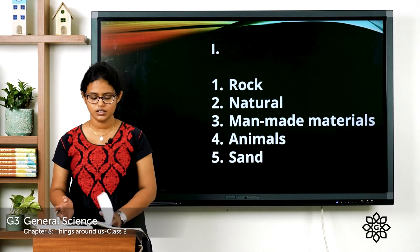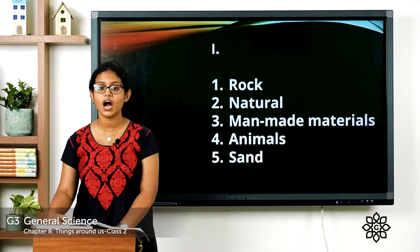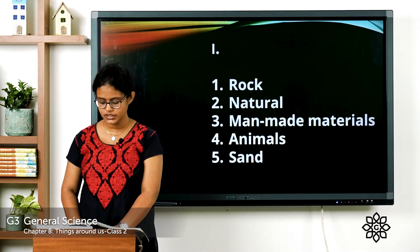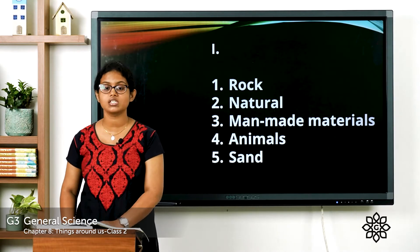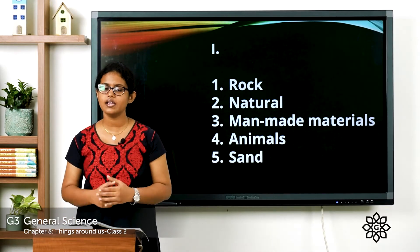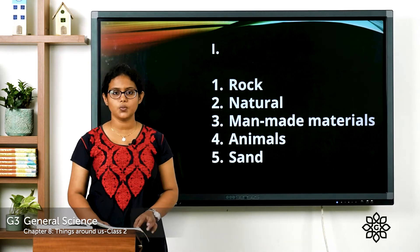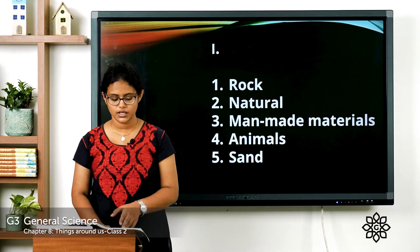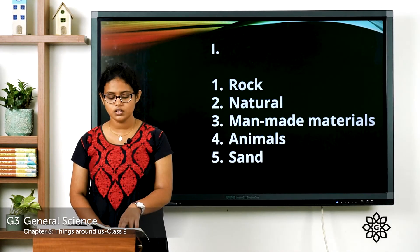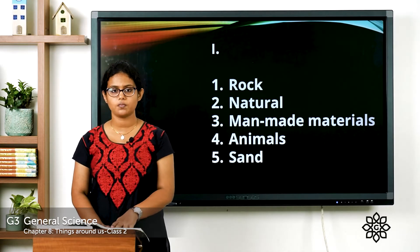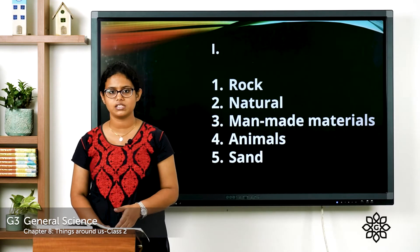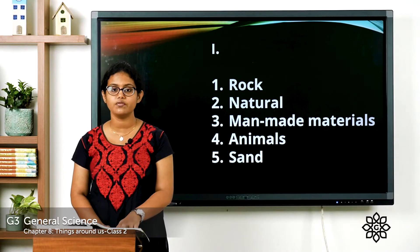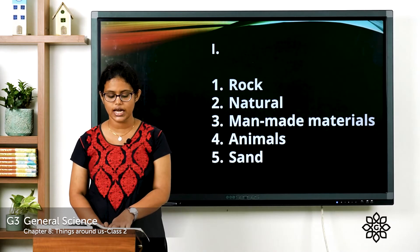Now let's see the answers. Question one: an example of a hard material is rock — rock is a hard material. Question two: materials such as honey and milk are natural. Question three: paper and plastics are man-made materials, made by people. Question four: wool and leather are natural materials obtained from animals. Question five: glass is made from sand.